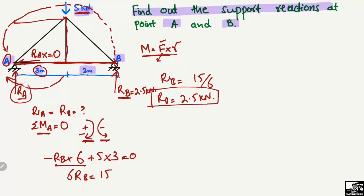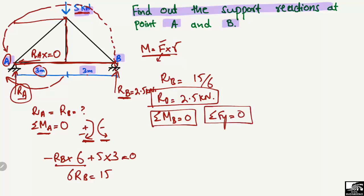To find the support reaction RA, we can either use the summation of moments at point B equal to zero, or use the summation of vertical forces equal to zero. Let's use the vertical force equilibrium equation. We again set a sign convention: upward forces are positive and downward forces are negative.